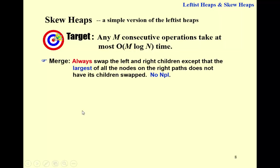So here is the merging strategy for a skew heap. We always swap the left and right children. Except that the largest of all the nodes on the right path doesn't have its children swapped. But that's not important. What's important is that we always swap the left and right children. And there is no NPL involved.